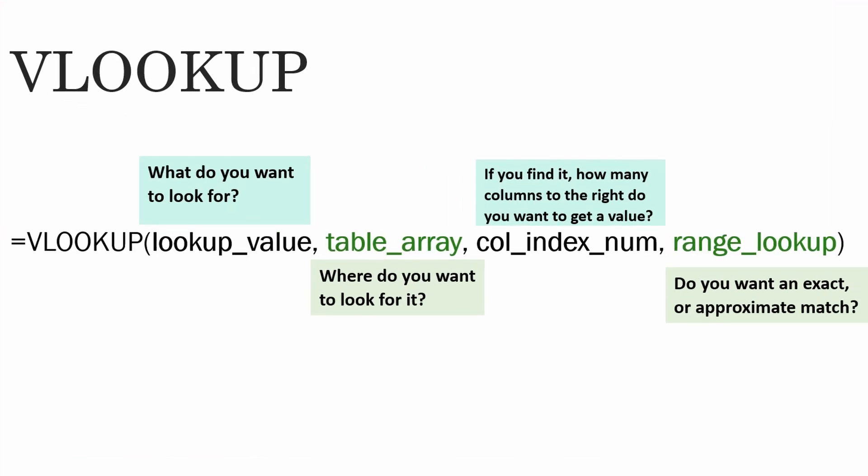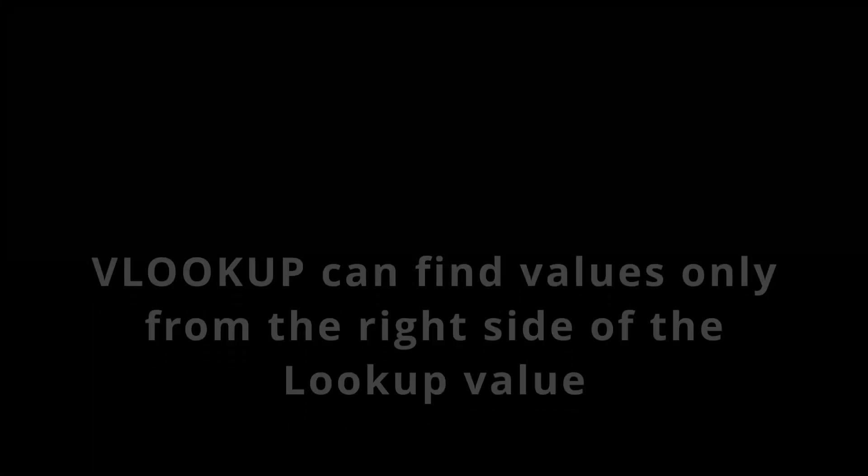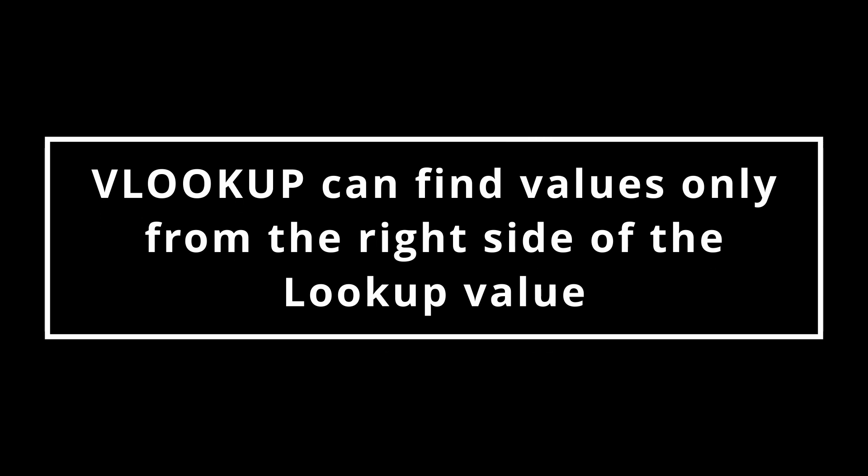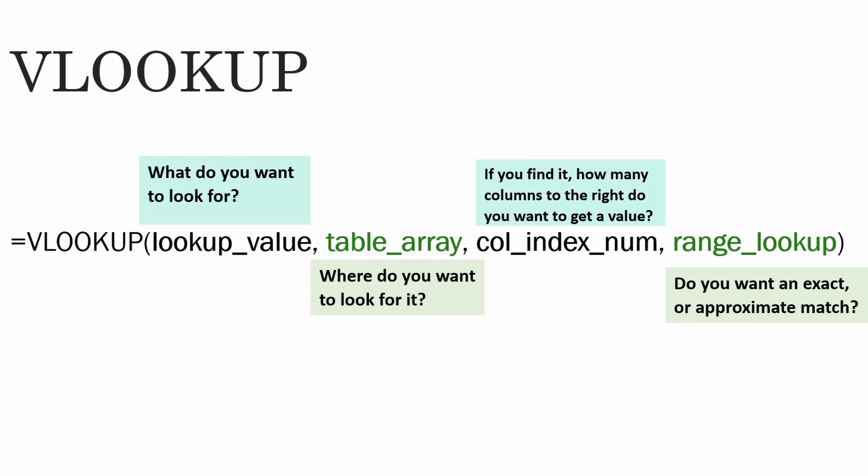Let's dive into this further. Your formula works like this: the lookup value is what you want to look for, the table array is where you want to look for it, and the column index number tells you how many columns to the right you want to retrieve the value from. One limitation of the VLOOKUP formula is that it can only find values to the right side of the lookup value — if the value is on the left side, it won't be able to find it.